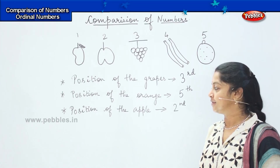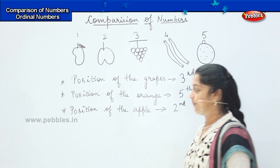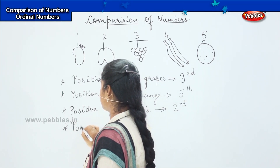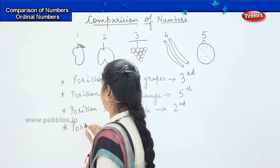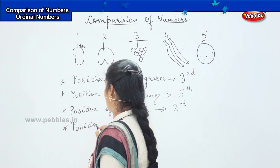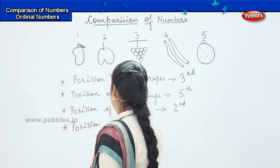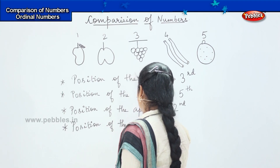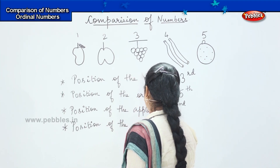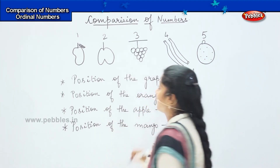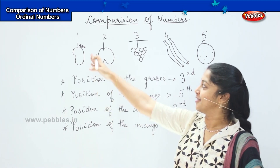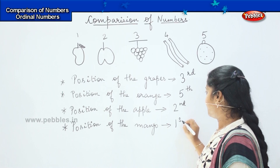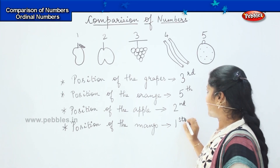Are you ready for the next question? Tell me the position of the mango. Very good — it is towards the first. So we will write 1st — one, s, and t.